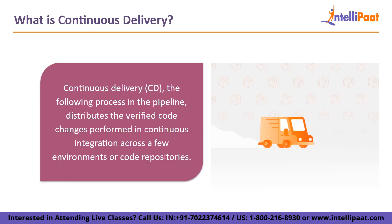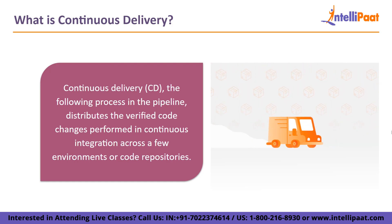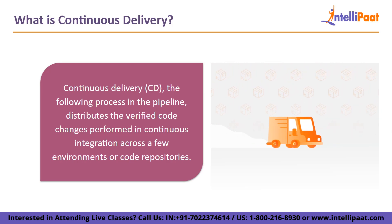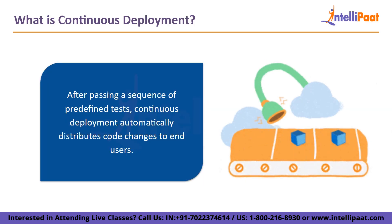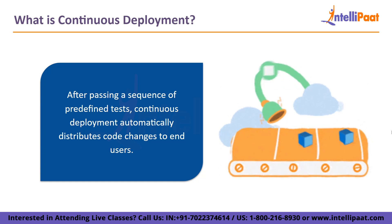What is continuous delivery? Continuous delivery follows the process in the pipeline and distributes the verified code changes performed in continuous integration across a few environments or code repositories like GitHub. The operations group can send them into a real-time production setting. An automated procedure is used to test the program and APIs to fix any issues. The DevOps team receives a message about the most recent build during the last stage of the CD process and they manually transmit it to the deploy stage. The continuous delivery pipeline's objective is to distribute new code quickly while yet allowing for some human monitoring. Continuous deployment, also known as CD, automatically distributes code changes to end users after passing a sequence of predefined tests such as integration tests that examine code in a mimic environment to validate code integrity.